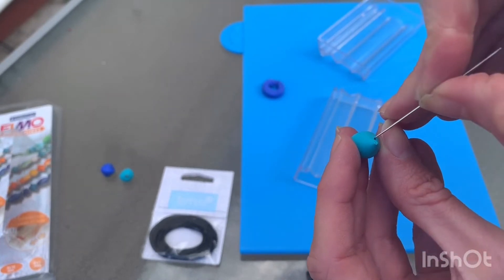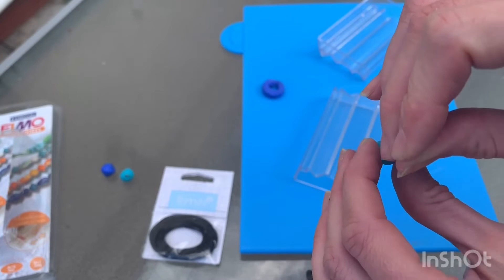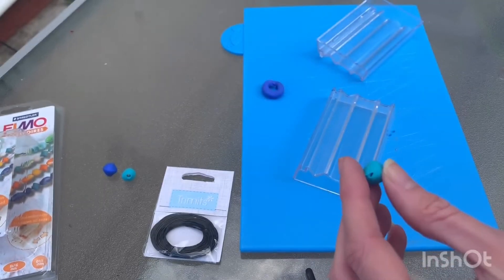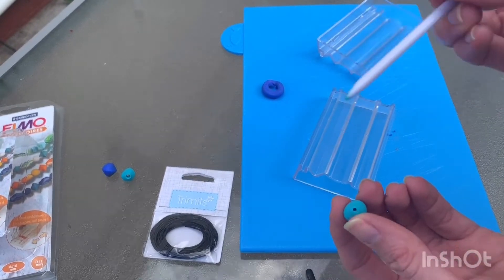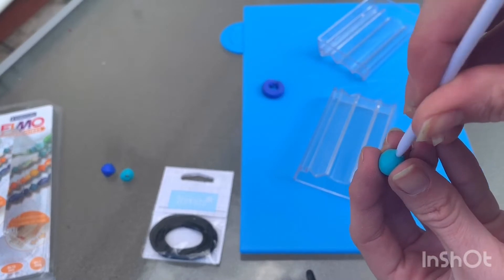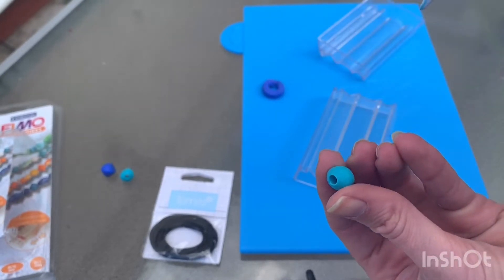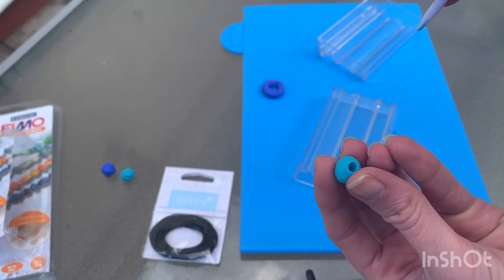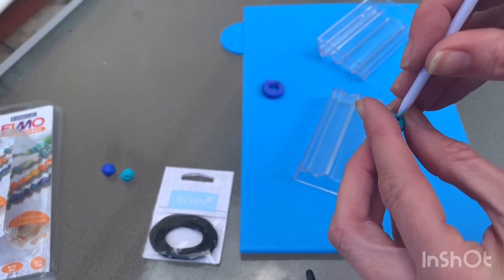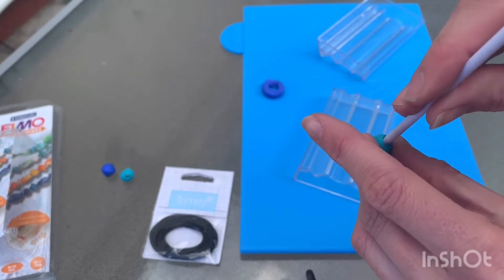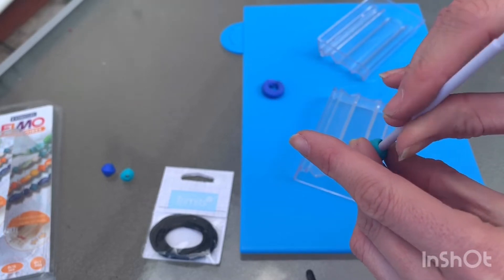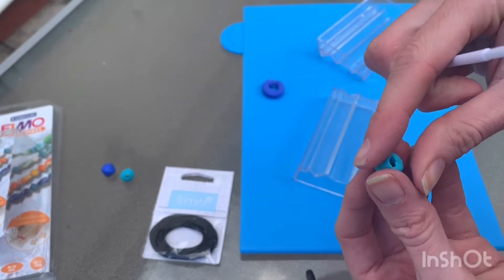So now you can do the same on the other end, and then you can take a wider tool and you can start making the hole a little bit bigger. This is so that we can thread through the necklace later on.